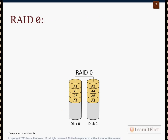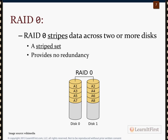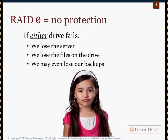RAID 0 is a striped set. You have two or more disks and you simply stripe the data — 50% is written to disk zero and 50% to disk one simultaneously, making it faster. However, there is no redundancy: half the data is on disk zero, half on disk one. It's purely a speed play. If either drive fails you've lost the server, the files, and probably your backups — just like running with a single disk.